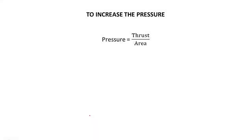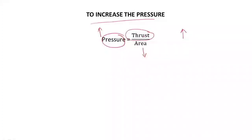Today we will learn how to increase pressure. Since pressure depends on thrust and area — thrust is the numerator and area is the denominator — if you increase thrust, the pressure will increase. If you decrease thrust, the pressure will decrease. Similarly, if you decrease the area, the pressure will increase; if you increase the area, the pressure will decrease.